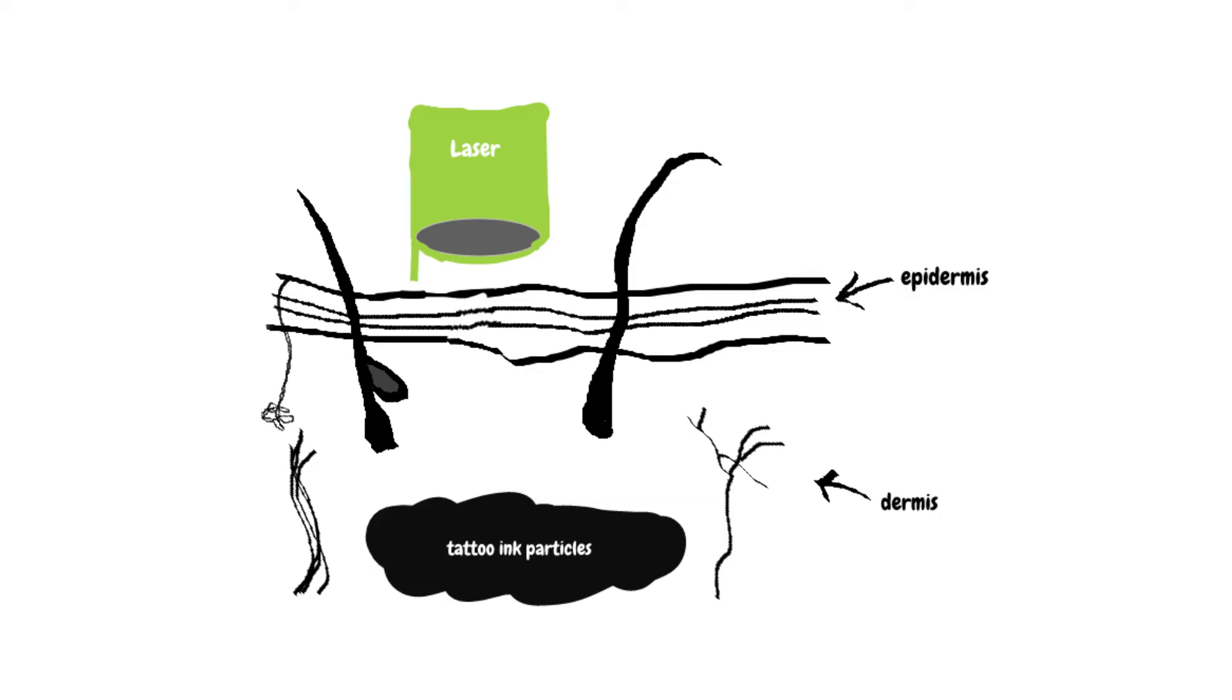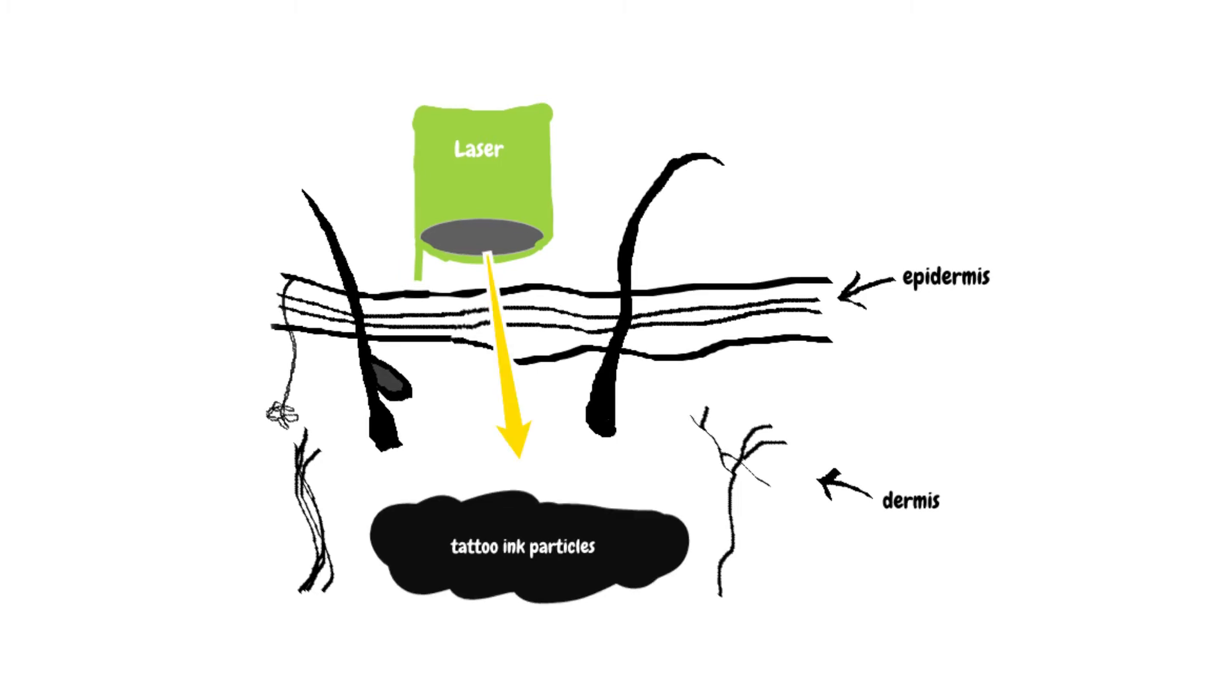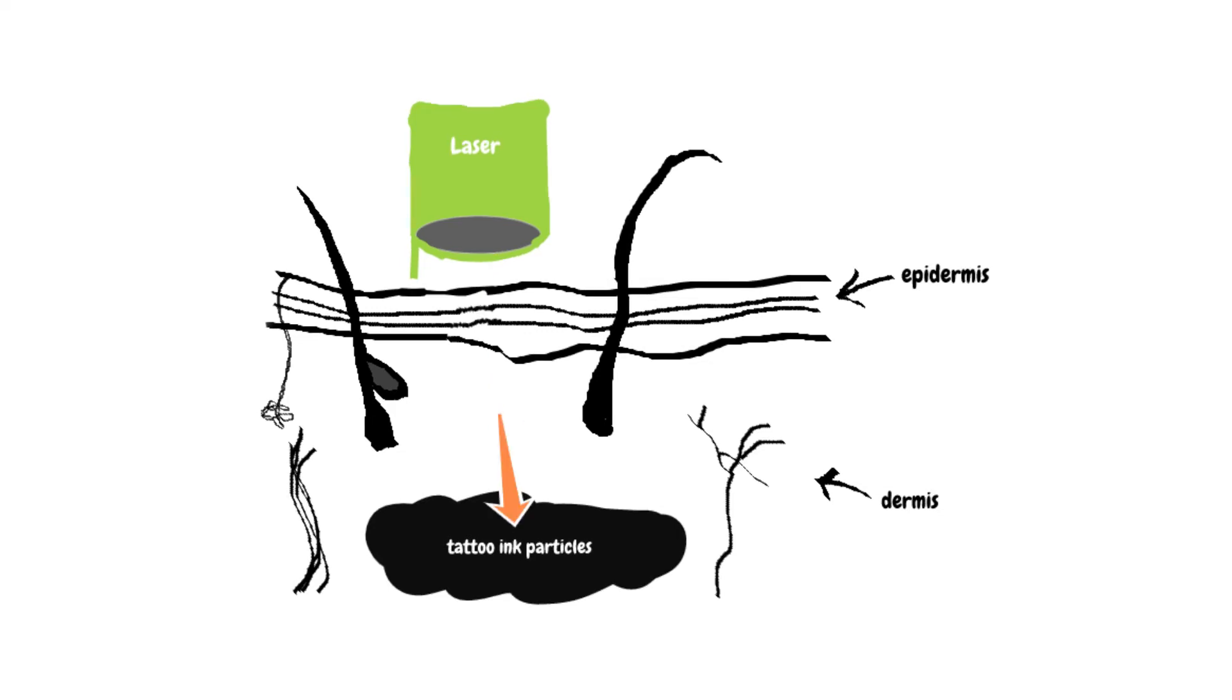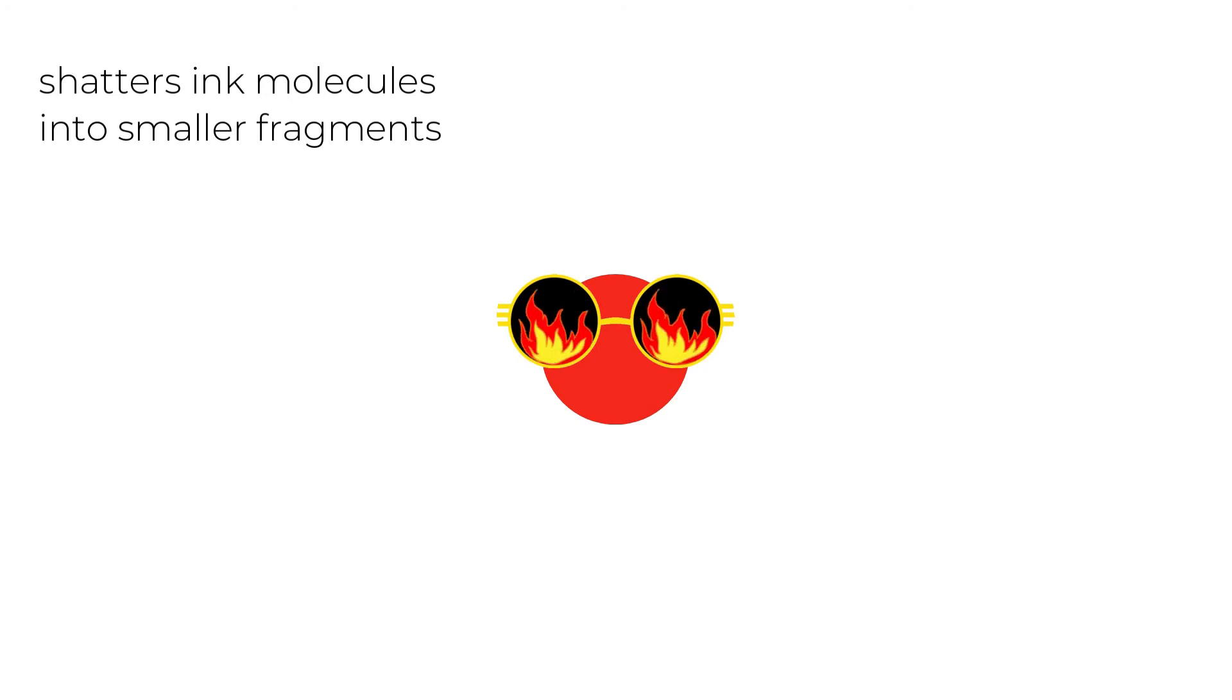Instead here we have a laser machine that emits quick bursts of light energy in very narrow frequencies. These energy pulses are selectively absorbed by the ink particles. Each pulse has the power to heat the ink particles by a thousand degrees causing the ink particles to shatter into smaller fragments.